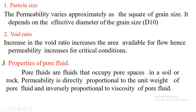Regarding particle size: permeability varies approximately as the square of grain size, that is D10². It depends on the effective diameter — specifically, what size corresponds to 10% passing in the grain size distribution. Gravel has larger particle size and hence larger voids and better connectivity, giving it more permeability. Fine-grained soils such as silt or clay have very small particle size and very small voids, so flow of water is very limited.